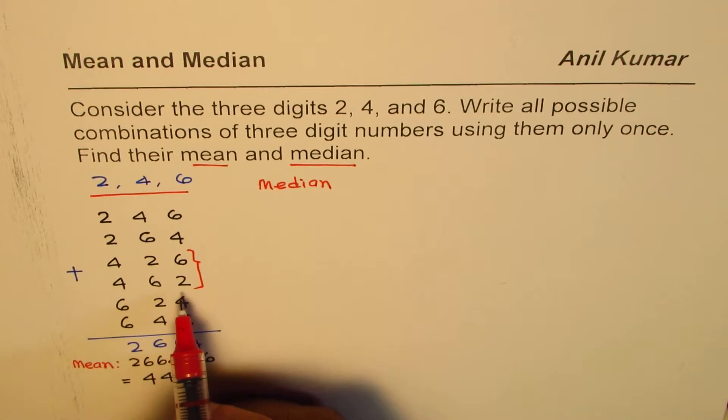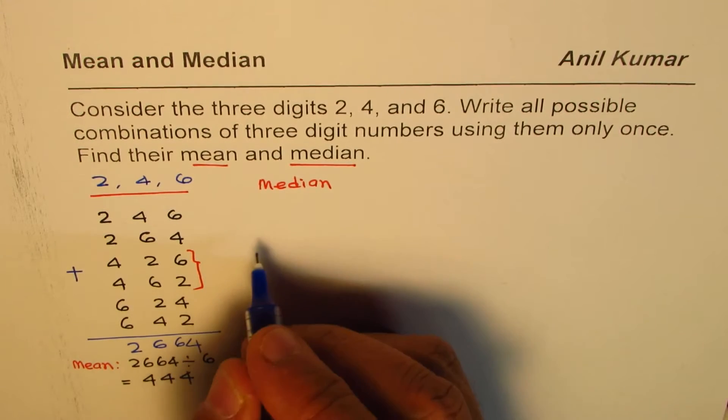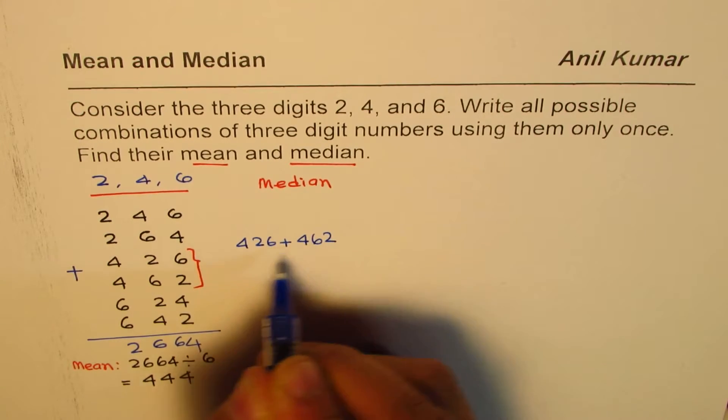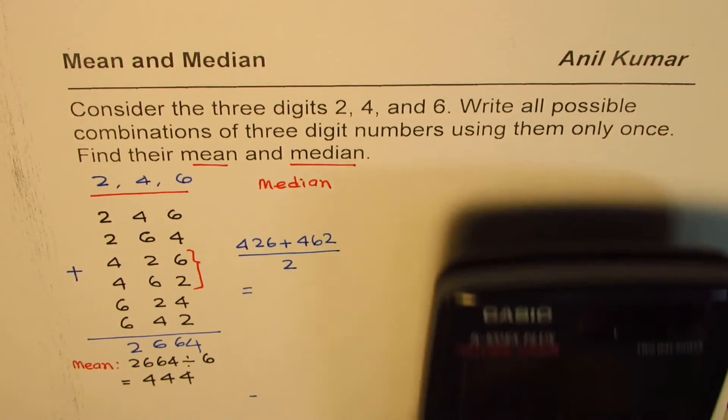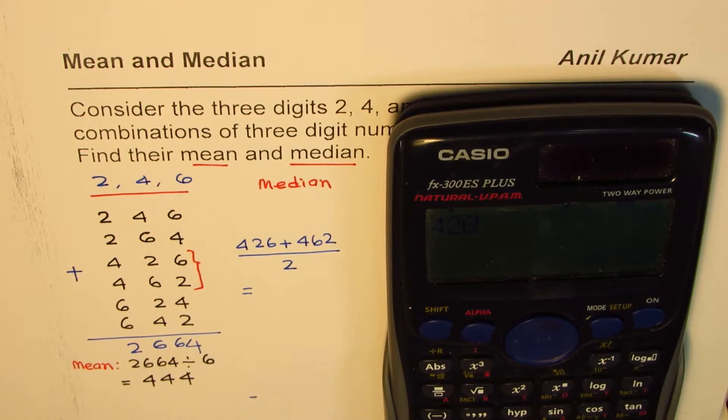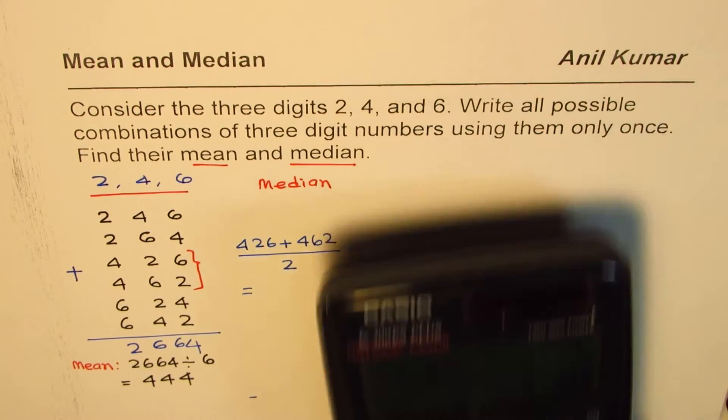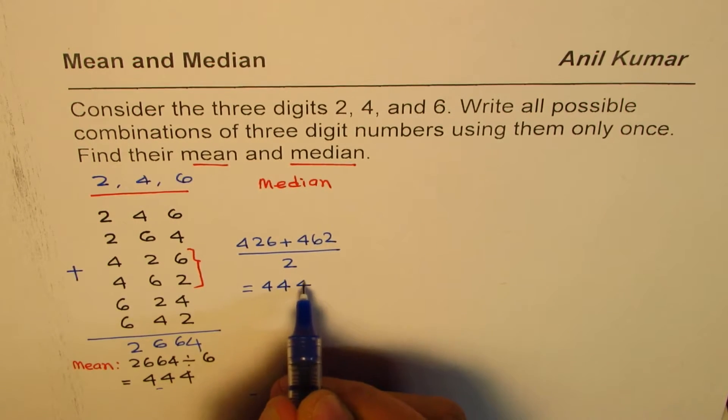So, to find median, what do we do? We will add them and divide by 2. So, let us add 426 plus 462 and then divide by 2. What do we get? Let us do it on the calculator. So, we have 426 plus 462 equals to 888. When divided by 2, we get 444. So, we get exactly the same number what our mean was.